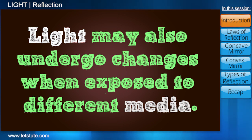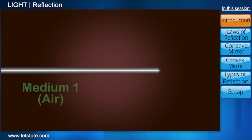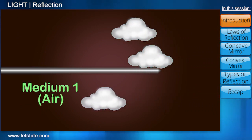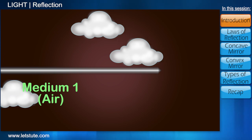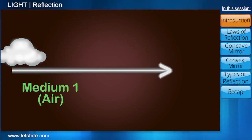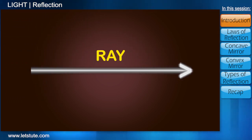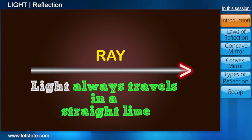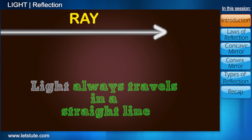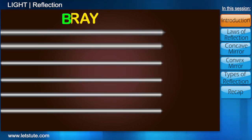So let's say light passes through any random medium, like air for instance. For ease of explanation, we'll imagine hereafter the light to be represented in the form of a ray like this. As light always travels in a straight line, the ray represents the straight path of light. The arrowhead represents the direction in which light travels. A collection of many rays is called a beam.